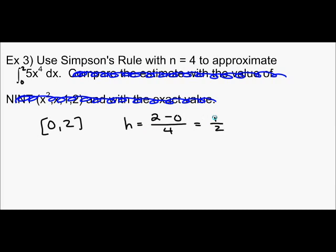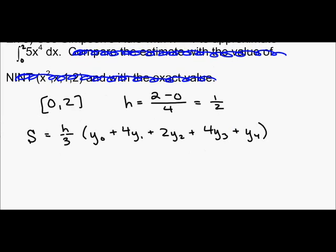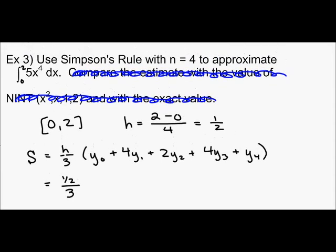And now I know S equals H over three times Y sub zero, plus four Y sub one, plus two Y sub two, plus four Y sub three, plus Y sub four. So I know that H is one half. And just like before we were using the trapezoidal rule, I need to find my different Y values.